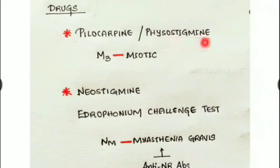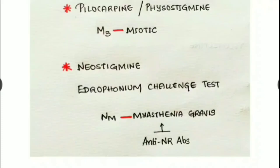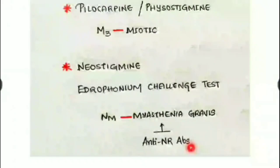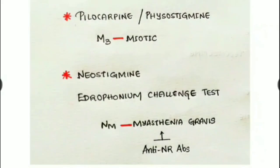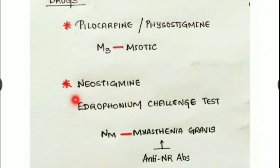Neostigmine is used for treatment of myasthenia gravis. Myasthenia gravis is an autoimmune condition with anti-NM receptor antibodies produced against nicotinic receptors, causing blockade of NM receptors so ACh cannot act on them. Neostigmine inhibits acetylcholinesterase, increasing ACh concentration so more ACh can act on the remaining NM receptors and compensate for the symptoms. The edrophonium challenge test is used to confirm myasthenia gravis: a low dose of edrophonium temporarily reverses the signs and symptoms.